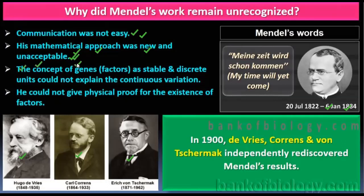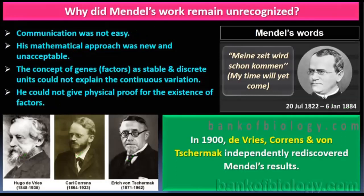The concept of genes — Mendel said they are stable and discrete units, but he could not explain continuous variation. He also could not give physical proof for the existence of factors. These reasons are why Mendel's work remained unrecognized. This is a very important question you may be asked.